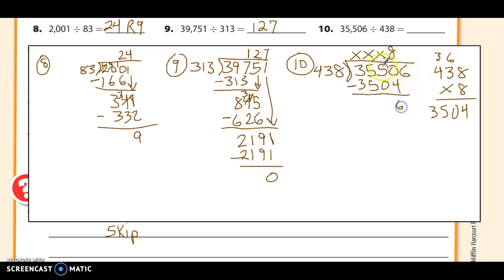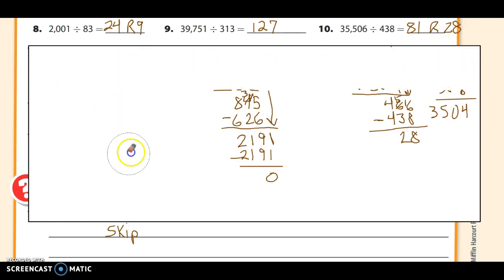I do 10 minus 4 is 6, and I borrowed, so this becomes a 4. 4 minus 0 is 4, 5 minus 5 is 0, and 3 minus 3 is 0. Now I have 466. 438 goes into 466 only once. 1 times 438 is 438. 16 minus 8 is 8, and I borrowed, so this becomes a 5. 5 minus 3 is 2. So my answer is 81 with the remainder of 28. I'm going to go ahead and move my whiteboard and reveal my next set of problems here.